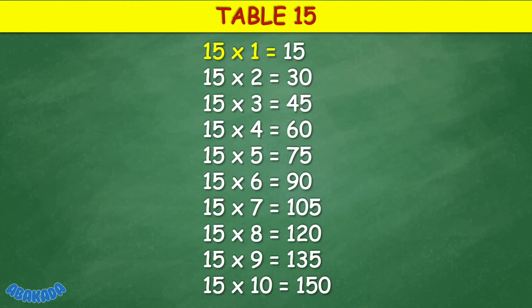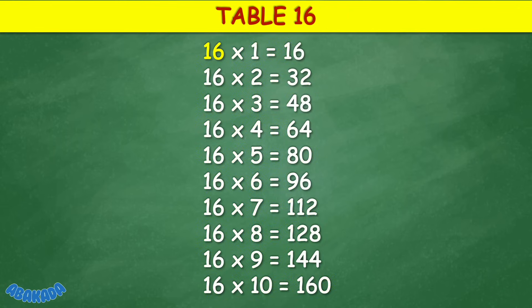Table 15: 15 times 1 equals 15, 15 times 2 equals 30, 15 times 3 equals 45, 15 times 4 equals 60, 15 times 5 equals 75, 15 times 6 equals 90, 15 times 7 equals 105, 15 times 8 equals 120, 15 times 9 equals 135, 15 times 10 equals 150.